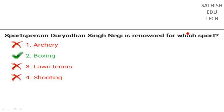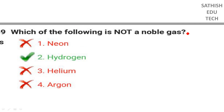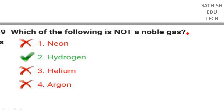Duryodhan Singh Negi is a sports person in boxing. Salman Rushdie. Noble gases include Helium, Neon, Argon, Krypton, Xenon. World Trade Organization — we will see Noble Gases in the playlist.